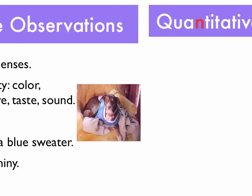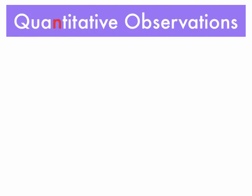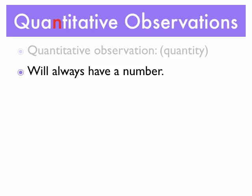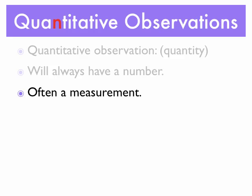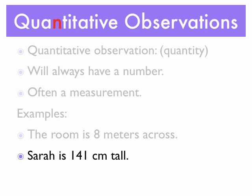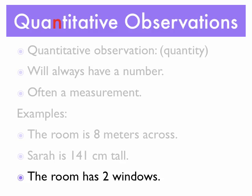The second type of observation we can make is a quantitative observation, and you may notice that the N in quantitative is highlighted in red. These observations have to do with numbers — they're going to describe a quantity. That may be a measurement or it may be counting something, but most often it's a measurement in science. Here are some examples: the room is eight meters across; Sarah is 141 centimeters tall; the room has two windows — all quantitative observations.